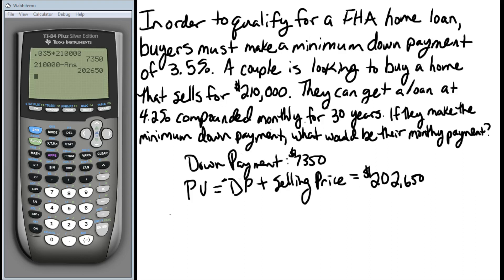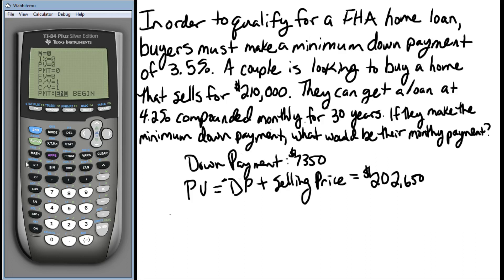Now that we've dealt with the down payment and reduced this to a regular present value annuity, we can solve it using the TVM solver. Going to Apps, Finance — we're going to make these payments monthly for 30 years, so 12 times 30 equals 360 payments, at 4.2 percent. Our present value is a negative amount going away from us, so — negative and negative make positive — that's positive two hundred and two thousand six hundred and fifty dollars. Payments are what we're looking for, so we'll come back to that.